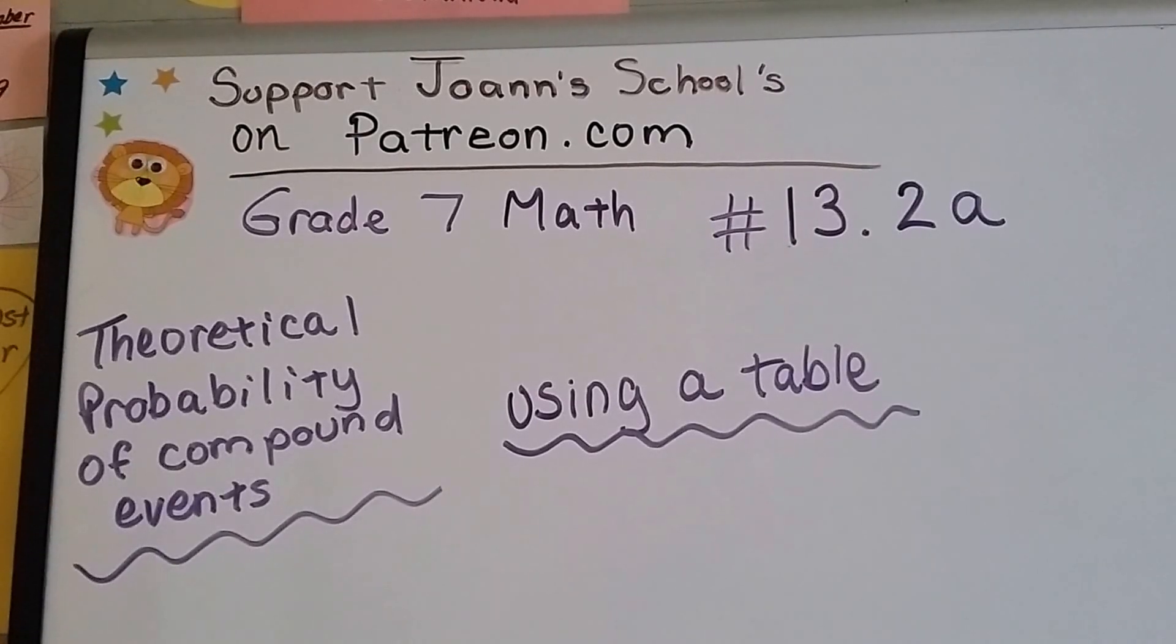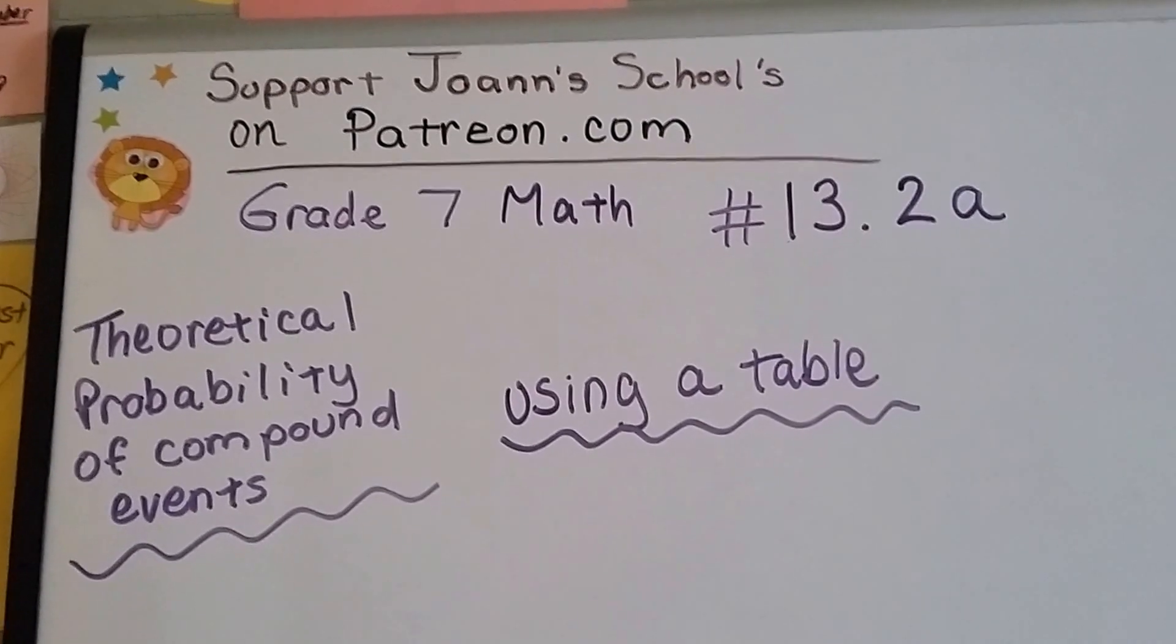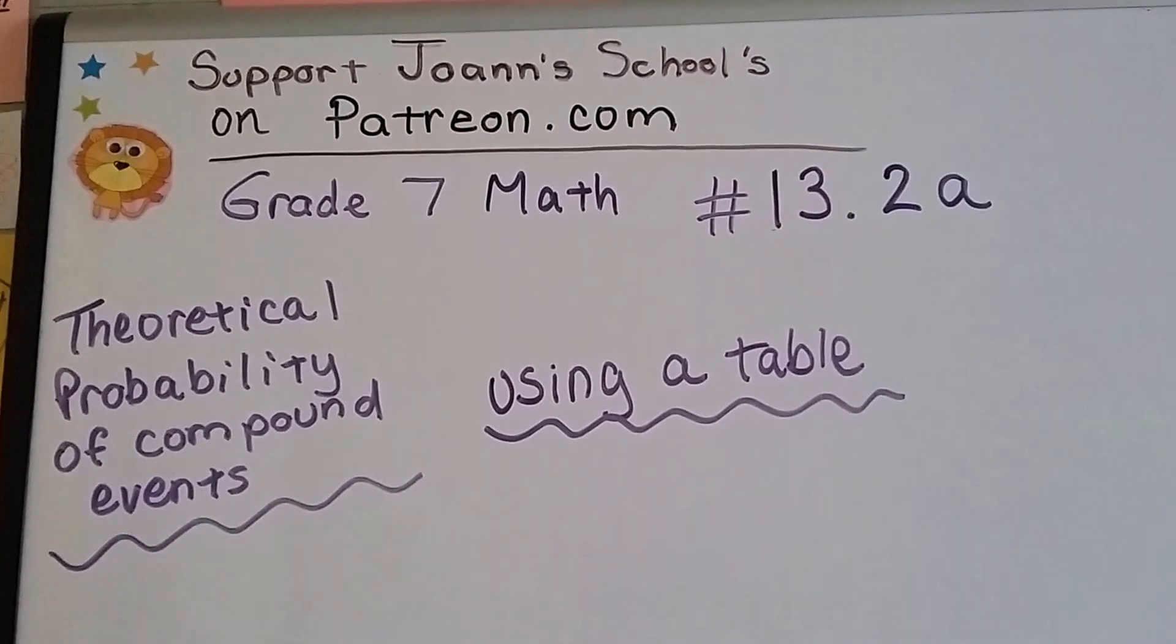Grade 7 math number 13.2a, theoretical probability of compound events using a table.